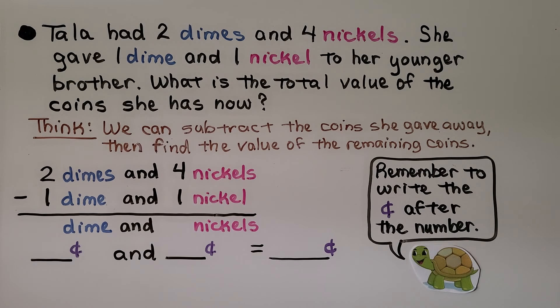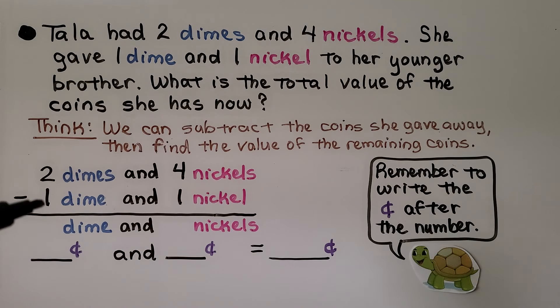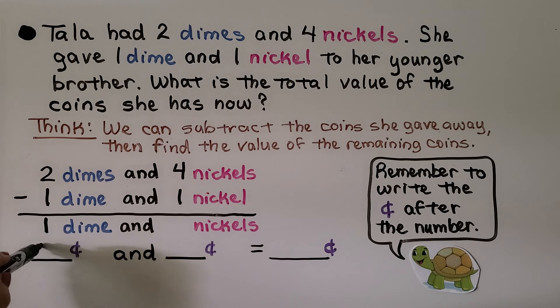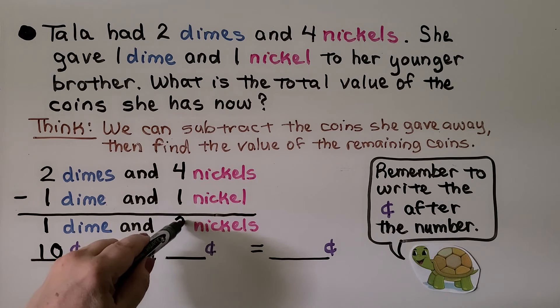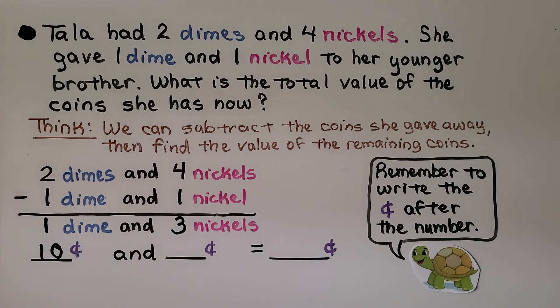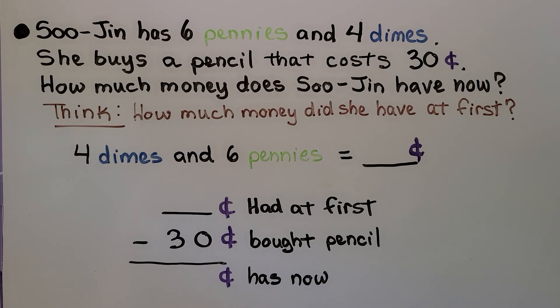Tala had 2 dimes and 4 nickels. She gave 1 dime and 1 nickel to her younger brother. What is the total value of the coins she has now? We subtract the coins she gave away, then find the value of the remaining coins. She had 2 dimes and 4 nickels; her brother got 1 dime and 1 nickel. Now she has 1 dime — that's 10 cents — and 3 nickels. Counting by 5's: 5, 10, 15 cents. She has 10 cents plus 15 cents, which equals 25 cents. Remember to write the cent sign so we know we're working with money.